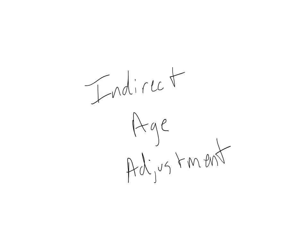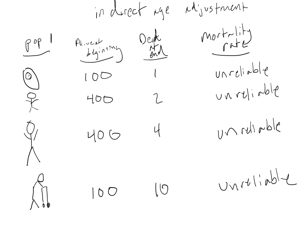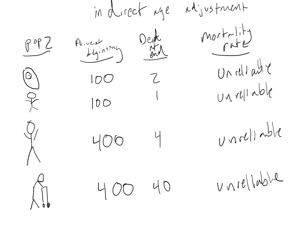The second method of age adjustment, indirect adjustment, requires a couple more steps than direct age adjustment. Epidemiologists use indirect age adjustment when the age-specific numbers of people dead are small, as shown here. In this case, mortality rates are unreliable because they are based on such a small number of actual deaths. Here, we have the same problem with our comparison population.